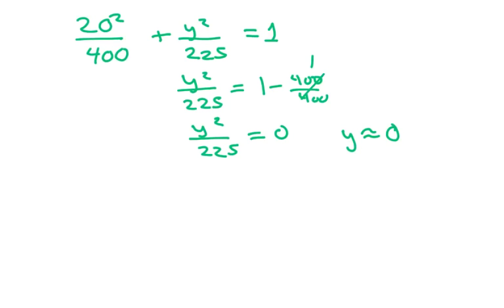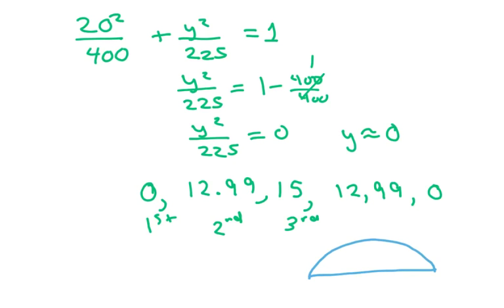So the heights are going to be 0, 12.99, which we already got, we already have 15, and we already have the 0 height again. Your first height, your second height, your third height, your fourth height, because you have to go on either side, and your last height. So let me draw this again. This would be 15, 12.99, 12.99, because they want either side of your 0. And this would be 0, 0 here. And these are your heights.